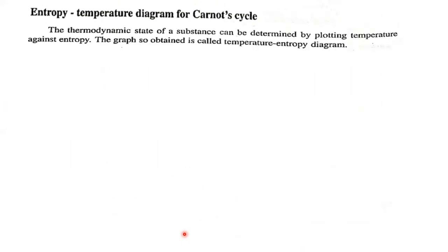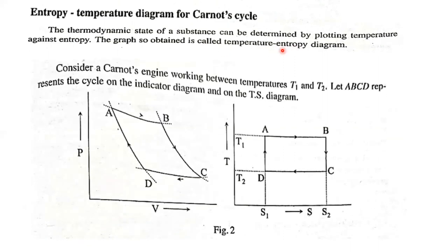The thermodynamic state of a substance can be determined by plotting the temperature against entropy. The graph obtained is called the temperature-entropy diagram, also known as the T-S diagram or indicator diagram.